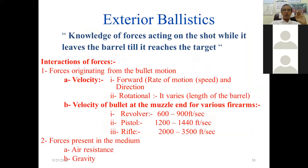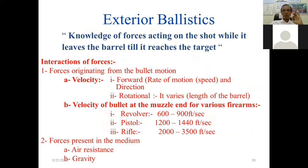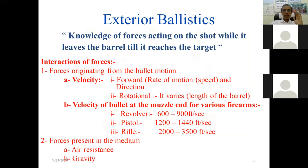After leaving the barrel, the pellet or bullet gets velocity — both forward and rotational. For a revolver it is 600 to 900 feet per second; for a pistol, 1200 to 1440 feet per second; for a rifle, more than 2000 to 3000 feet per second. The rifle bullet has much greater velocity.